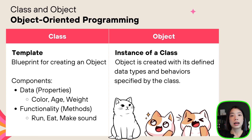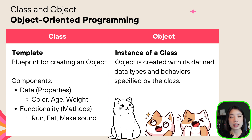Now let's look at the syntax for writing object-oriented programming. An object-oriented program involves two main parts: a class and an object. Writing a class is like writing a blueprint or template. In a class you define the types of data and functionalities that the object will have — for a cat, the data would be color, age, and weight, and the functionalities would be run, eat, and make sound. The data within a class we call properties, and the functions within a class we call methods.